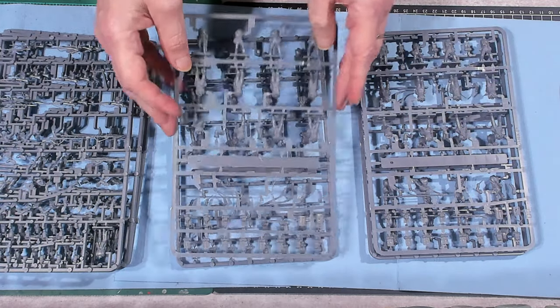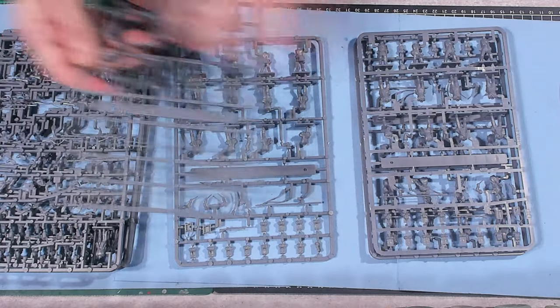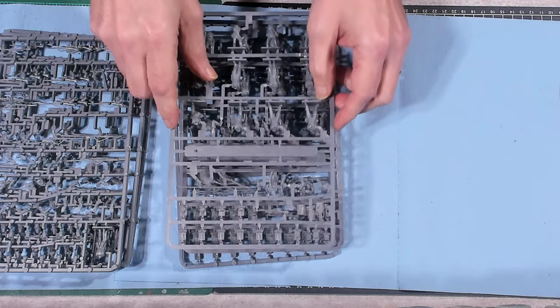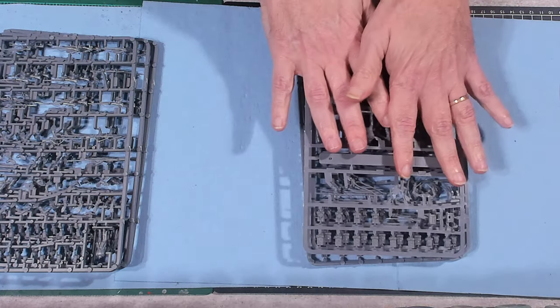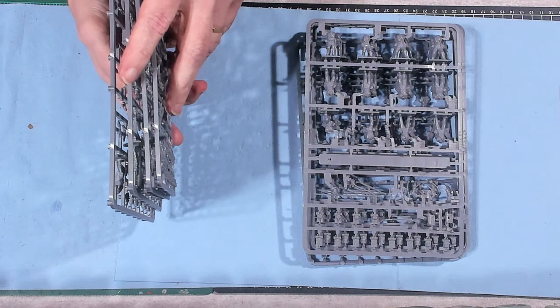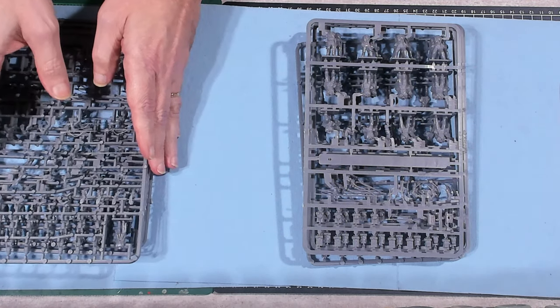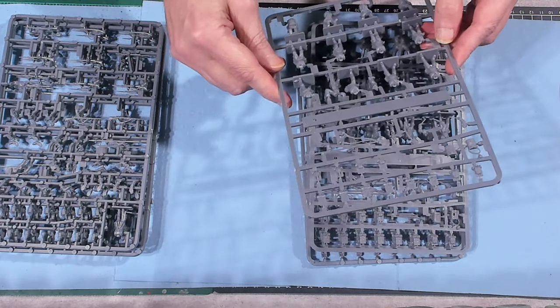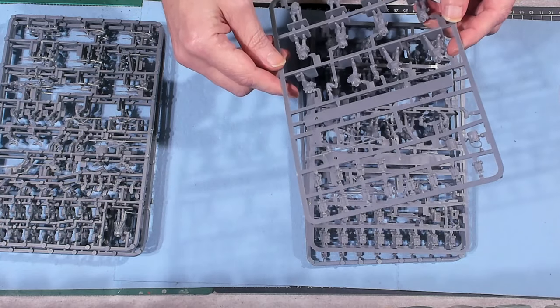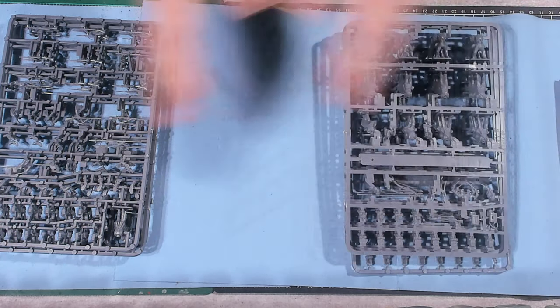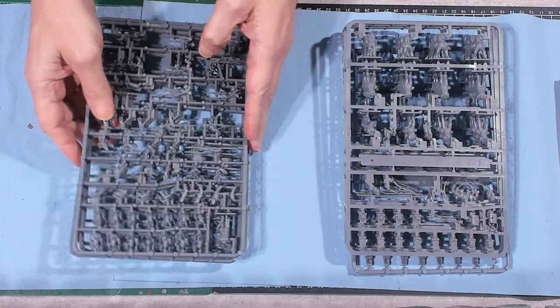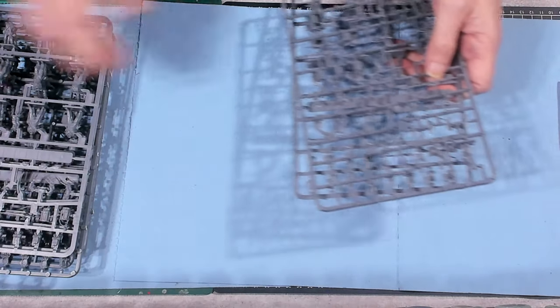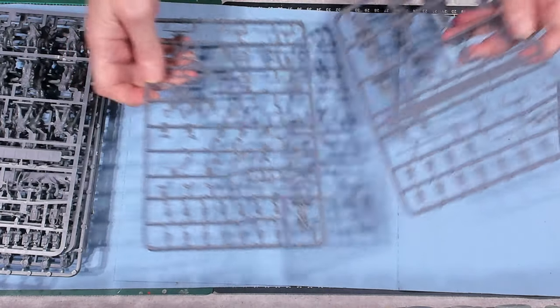But okay, these guys have, what'd I say, 12 and there's one, two, three, four of them. So that's 48 models just right there. And then four more models making it 52. And there's the four officers. So I think they want you to make four units, but with only one flag per unit. We've got our sprues down.